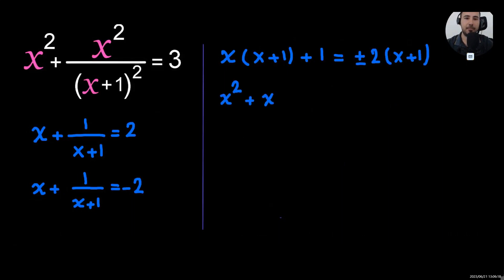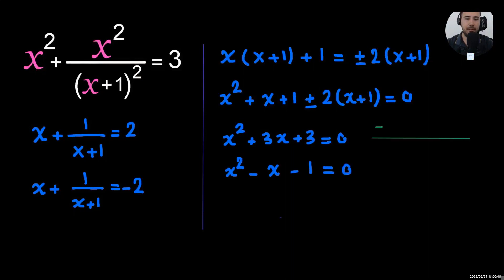And then, 2x plus 1, it will go to the left-hand side. Now, this will give us two equations. One's positive. And then, this one, the negative 2 times x plus 1.